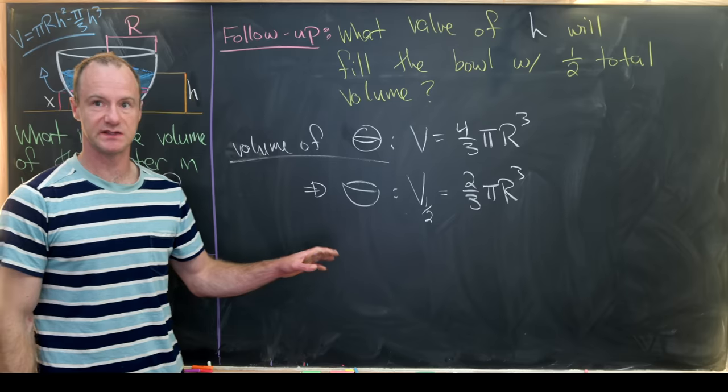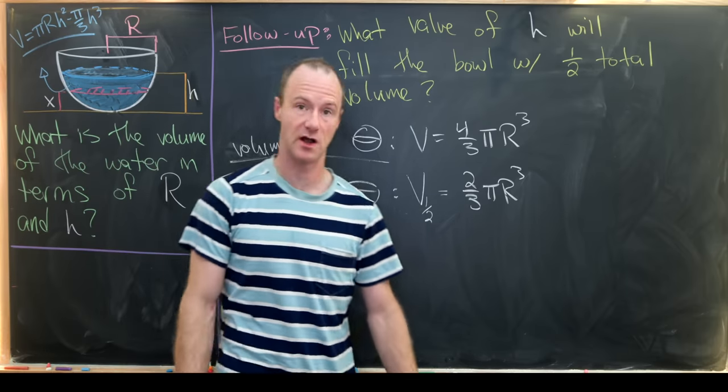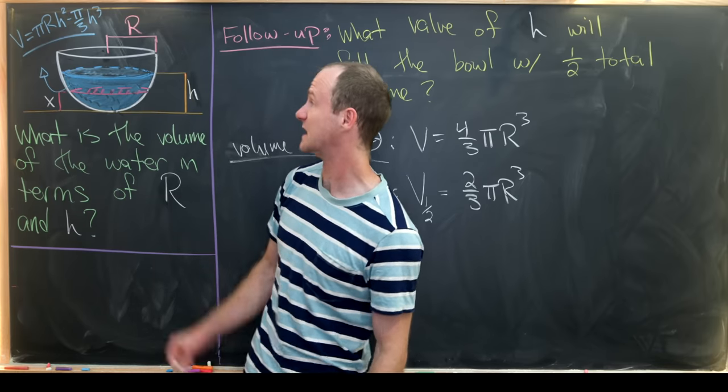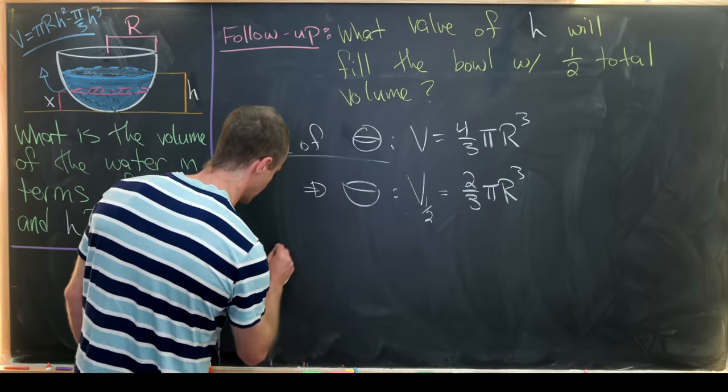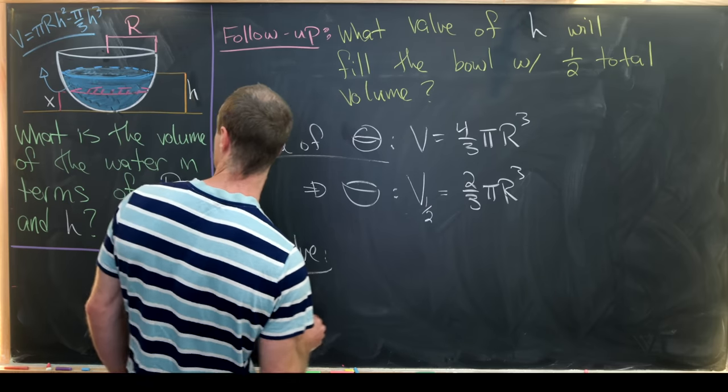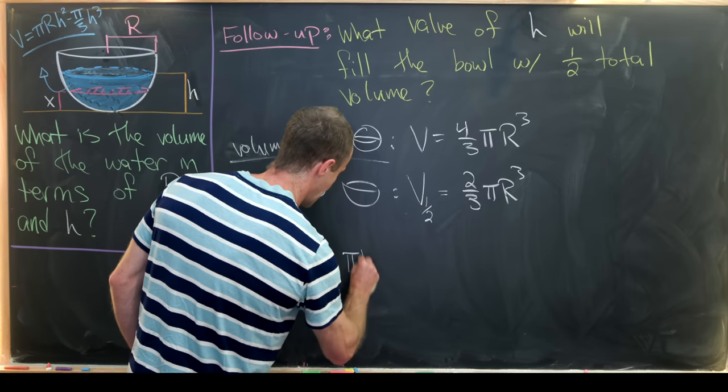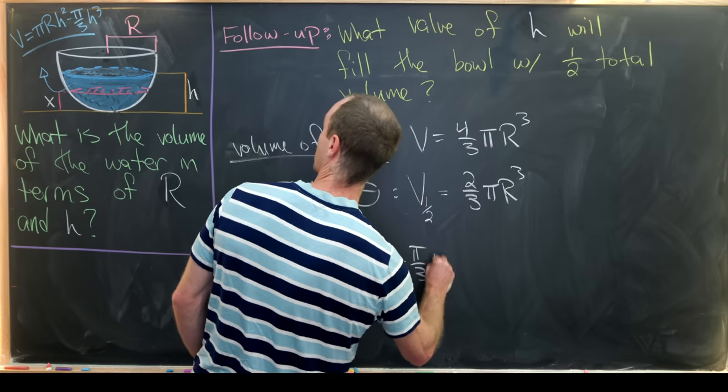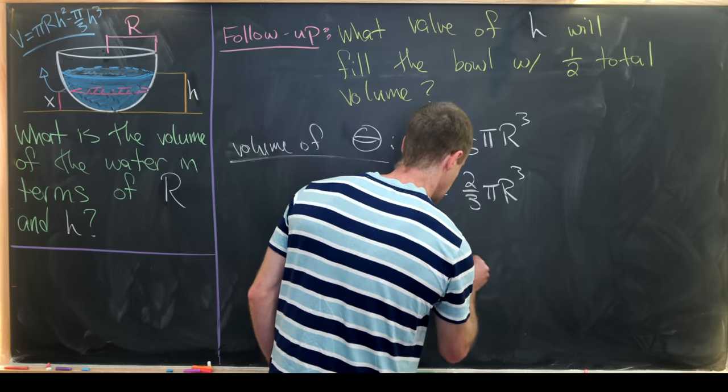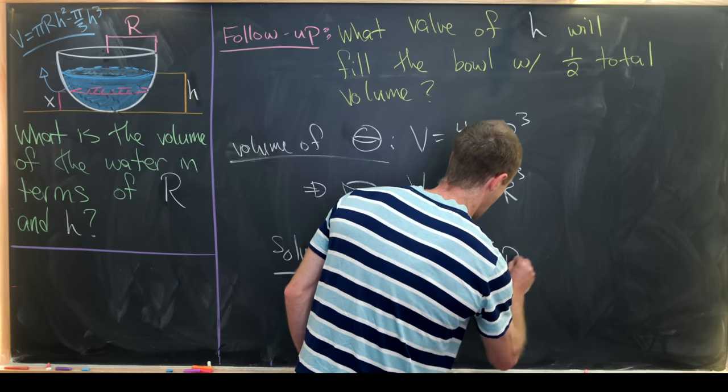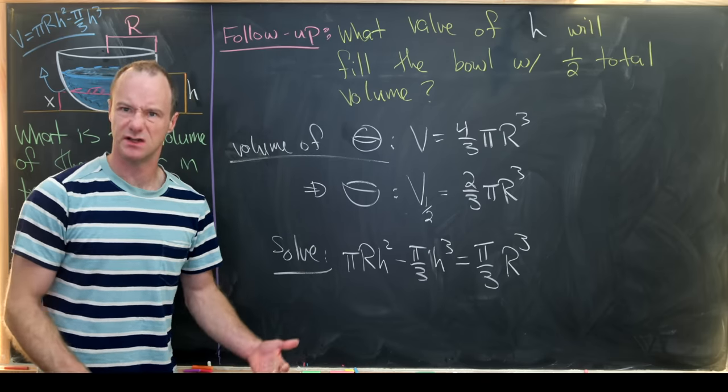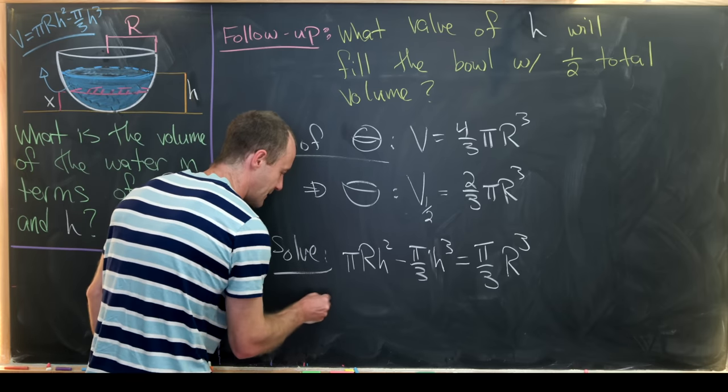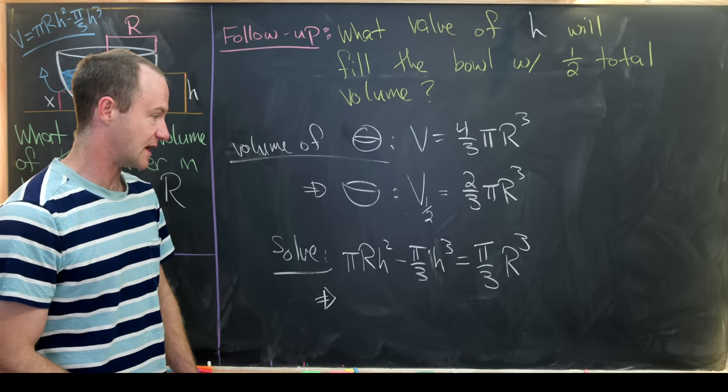So in fact, what we want to do is fill this hemisphere up halfway. So that means we want to further take another half of this and set it equal to our calculated volume over there. So in other words, we want to solve the equation πRh² minus π/3 h³ equals π/3 R³. So I divided that by 2 to take the 2/3 to 1/3. And then we can divide both sides by π, both sides by π. Maybe also divide both sides by R³.